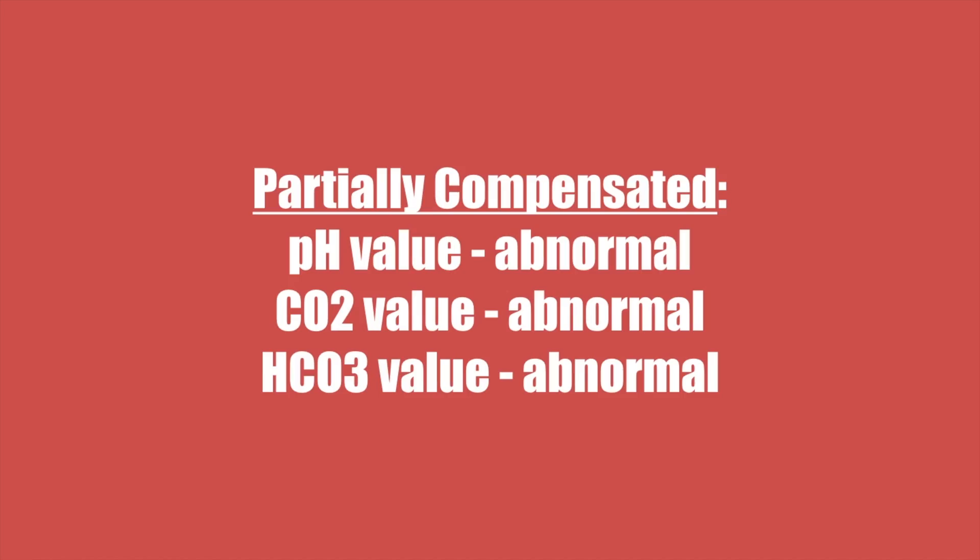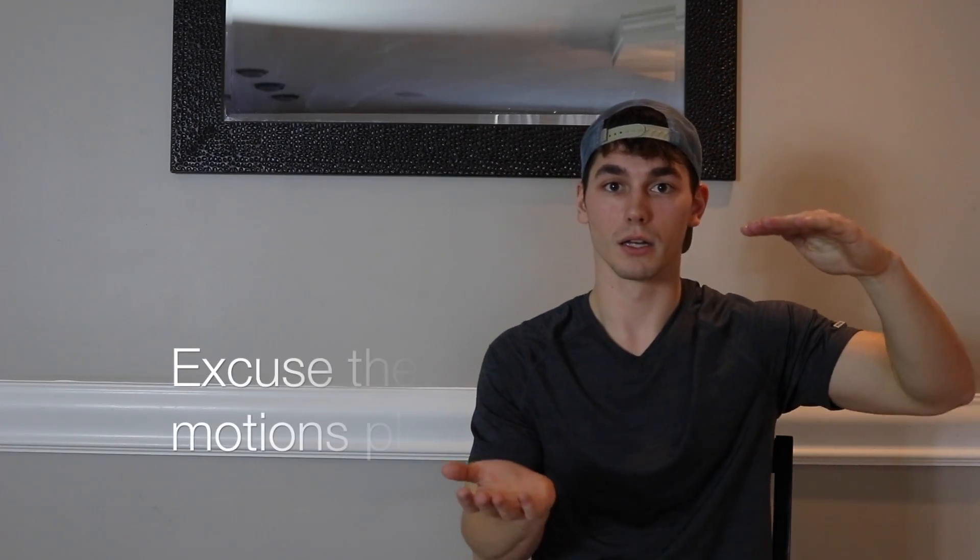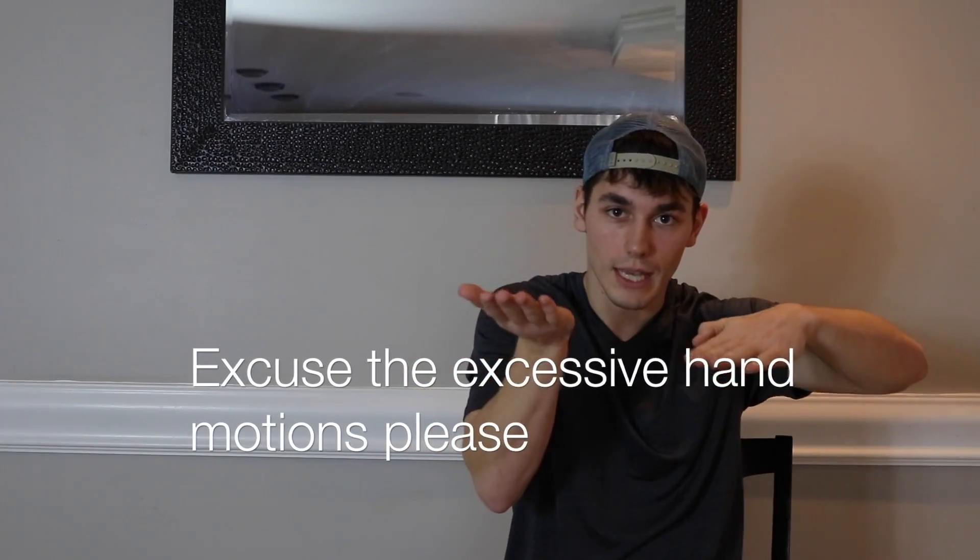So if it's partially compensated, you're going to have bad values all over the place — none of them are going to be normal. You're going to have an abnormal pH; it's partially compensated so it's not normal. It's respiratory alkalosis so you already know respiratory is going to be abnormal. But your metabolic bicarb is going to be acidic, which means it's going to be less than 22. That means it's compensating, it's trying to bring down that pH. Your bicarb will drop to a low level, and as soon as that pH gets into normal range, the body's going to try to fix itself.